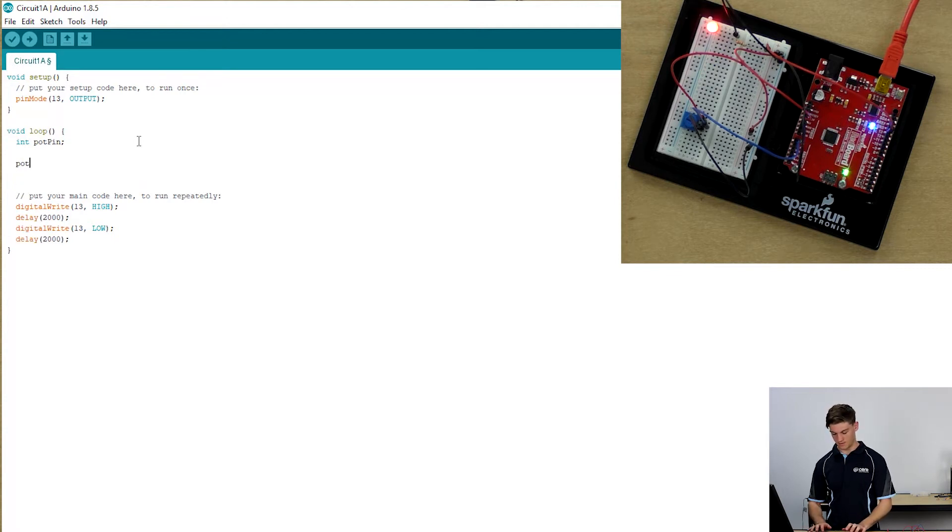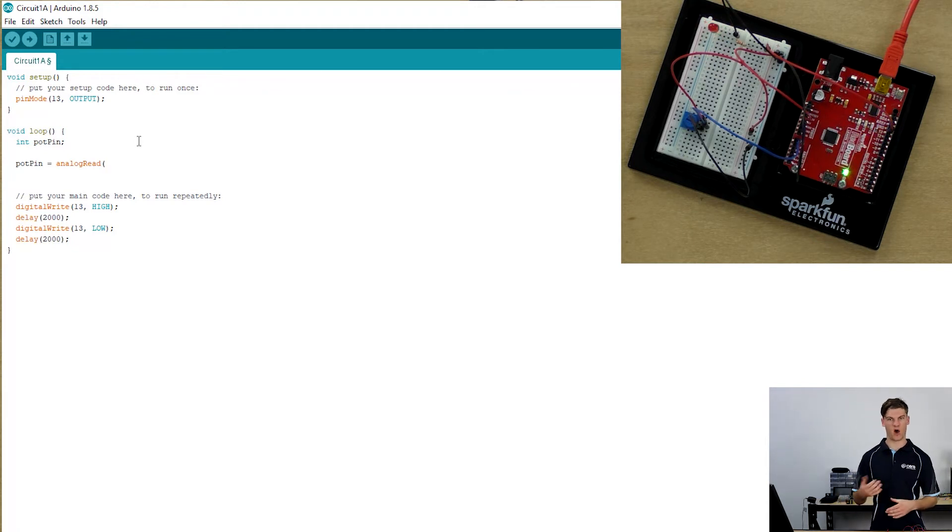Pot pin will be equal to analog read. We'll use the function analog read because it's not reading a high or a low, it's reading a value from zero to 1023 or zero to five volts.